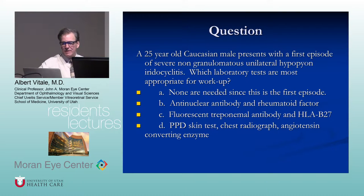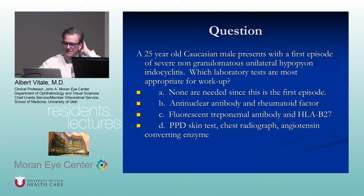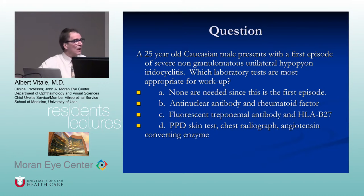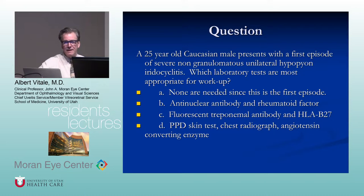A 25-year-old white male presents with his first episode of non-granulomatous anterior uveitis with unilateral hypopyon. The most appropriate laboratory test: HLA-B27, since the most common cause of hypopyon in uveitis is HLA-B27-associated disease. However, it can also indicate serious conditions like leukemia and endophthalmitis — the history should help differentiate.